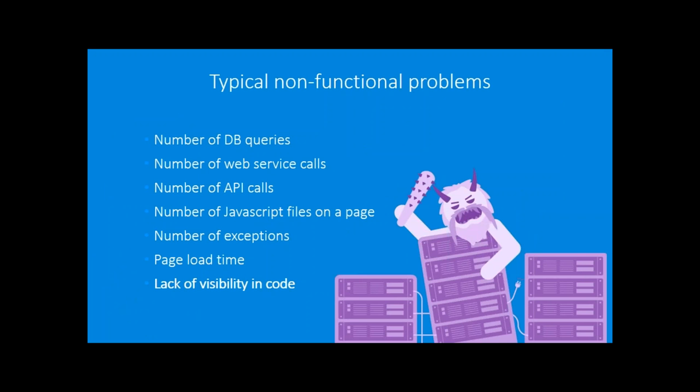That's where we kick in with APM tools — we can plug APM programs, not only Dynatrace but any other APM tool, into the continuous integration tool to monitor deployment and of course to monitor production. Typical non-functional problems include number of DB queries, number of web service calls, API calls, JavaScript files on the page — it's really surprising how much JavaScript you can find on different web pages — number of exceptions, page load time, and lack of visibility in code.